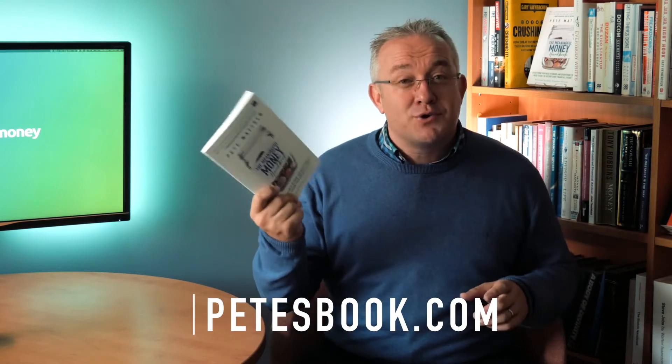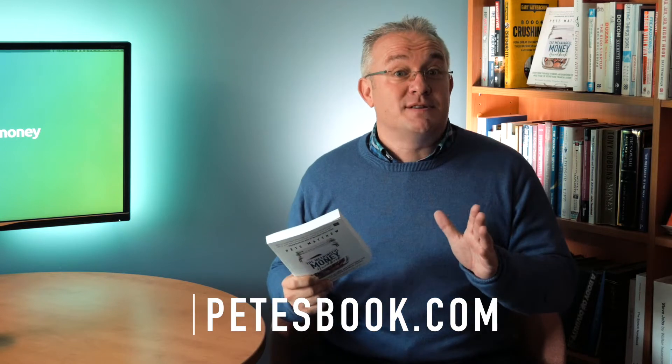A little bit over the top but this is exciting. If you haven't picked up a copy of the Meaningful Money Handbook yet, go to PetesBook.com for all the links as to how to do that. Amazon obviously is usually the first choice for most people, but you can get it at Waterstones, WHSmiths, or direct from the publisher. All those links are at PetesBook.com. If you've got it, read it and enjoyed it, please leave me a review on Amazon. It massively helps.